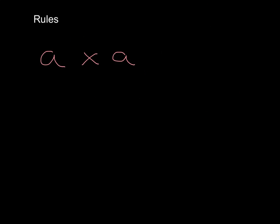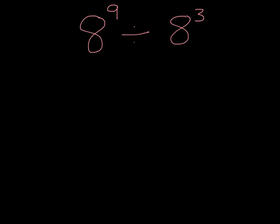So our first rule is: when we have two bases that are the same and they're multiplied with powers B and C, the base stays the same and we add the powers to get B add C. Similarly, there is a rule for division. When we had times we added the powers, so when we divide we subtract the powers — and that's just true.